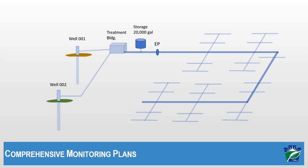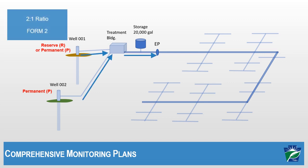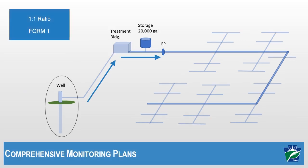Things get more complicated if a system has two or more sources supplying one entry point — for example, a permanent source and a reserve source supplying the same entry point. These systems complete a different form, Form 2, which we won't cover in this tutorial. DEP is providing training outside of this video for these systems. This tutorial is geared to systems with the one-to-one source to entry point ratio, which use Form 1 to complete the Comprehensive Monitoring Plan.